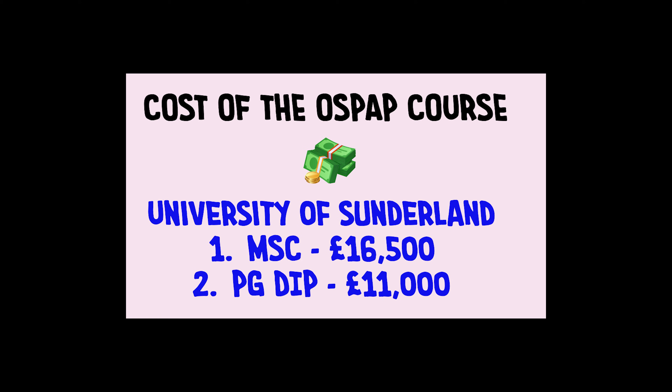The four universities offering OSPAP — Sunderland, Aston, Brighton, and Hertfordshire — are located in different parts of the UK. Research which location suits you based on family, friends, or student contacts. Regarding cost: for University of Sunderland, the MSc is £16,500 (around 17 lakh INR) and the PG Diploma is £11,000.